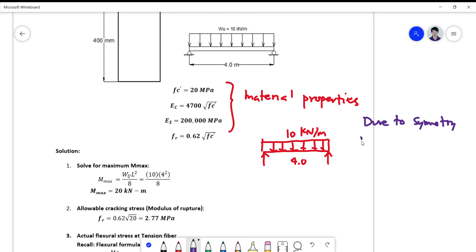Your r1 and r2 are just equal, so r1 equals r2 equals 10 times 4 divided by 2, which is simply 20 kilonewton.